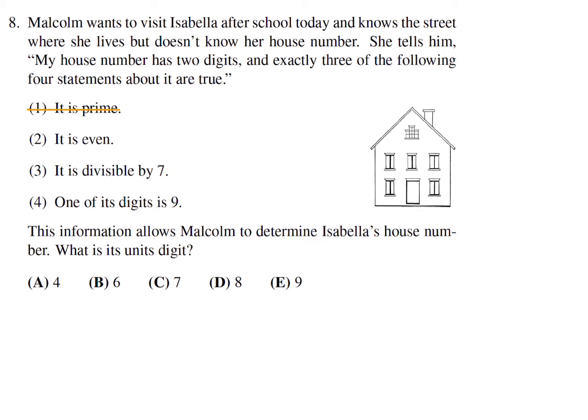Alright, so it's even, it's divisible by 7 and one digit is 9. So obviously if it's divisible by 7, it has a multiple of 7. And the only multiples of 7 that have a 9 in it are 49,